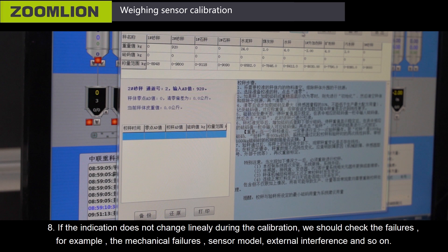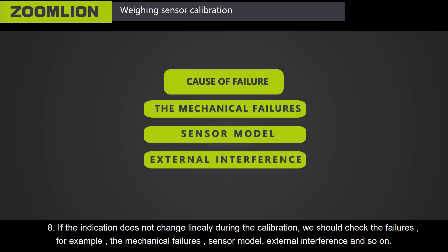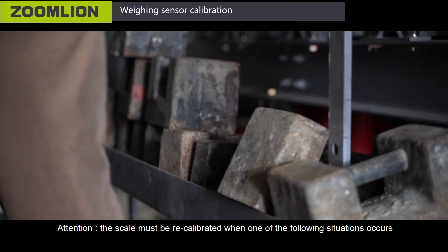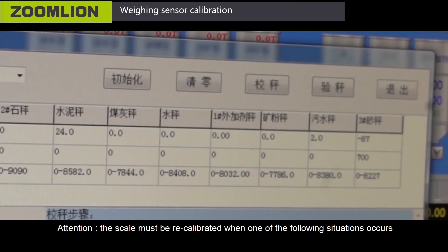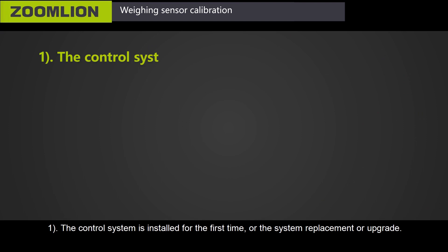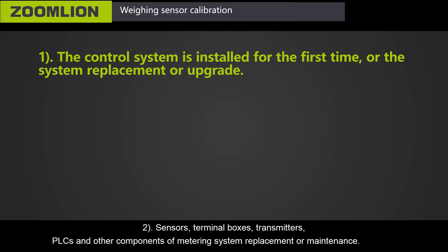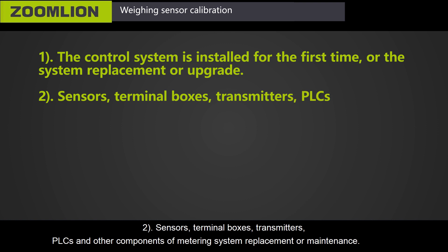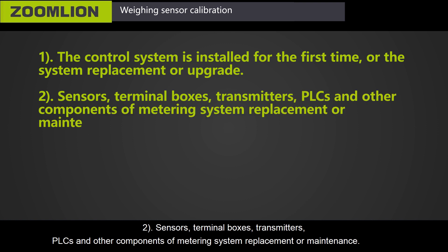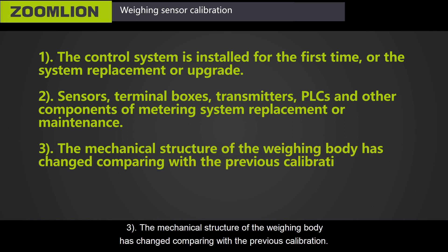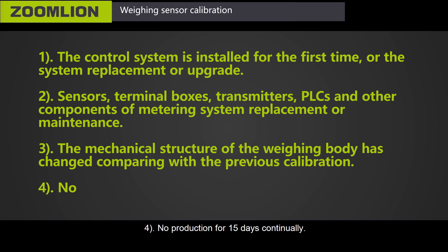Eighth, if the indication does not change linearly during calibration, check for failures such as mechanical failures, sensor model issues, or external interference. After resolving failures, recalibrate. Note: the scale must be recalibrated when any of the following occurs — the control system is installed for the first time, or the system is replaced or upgraded; sensors, terminal boxes, transmitters, PLCs, or other metering system components are replaced or maintained; the mechanical structure of the weighing body has changed since the previous calibration; or there has been no production for 15 continuous days.